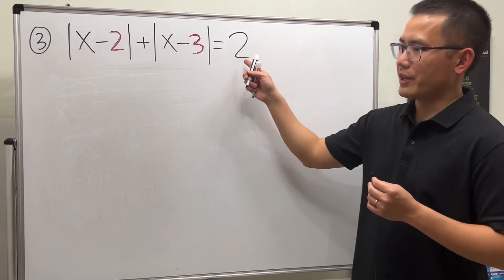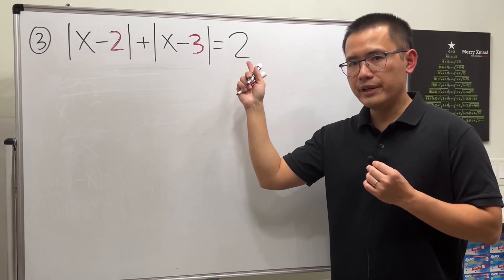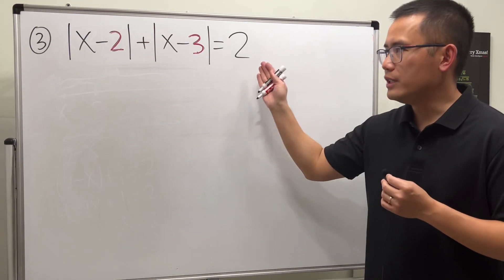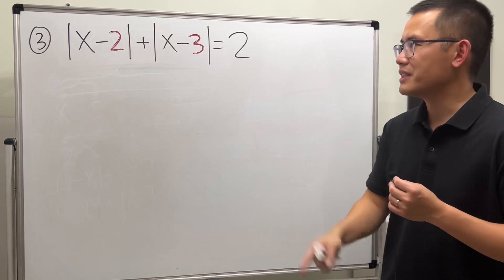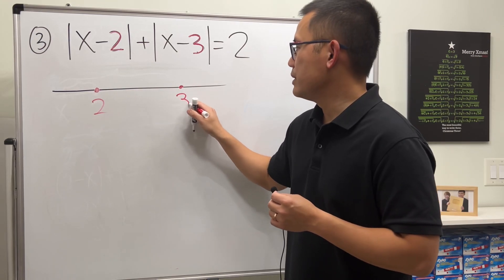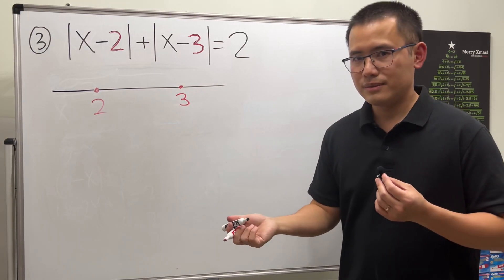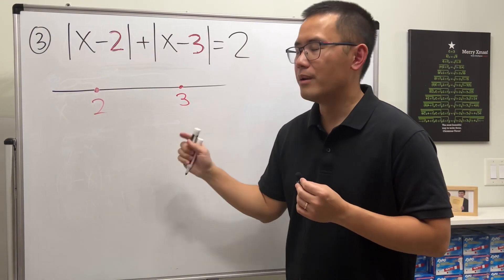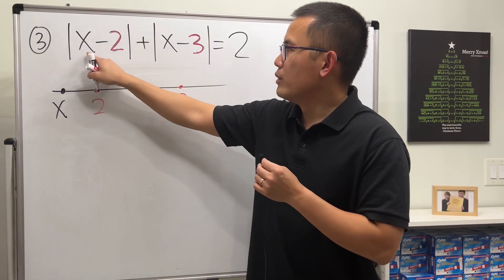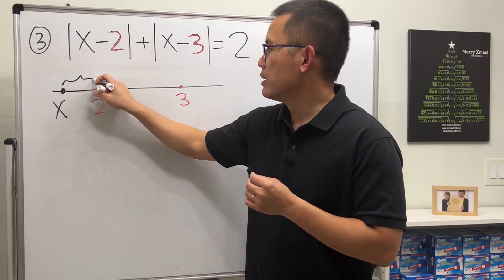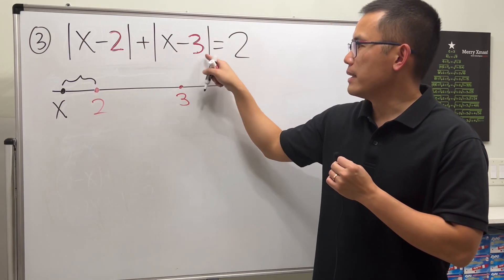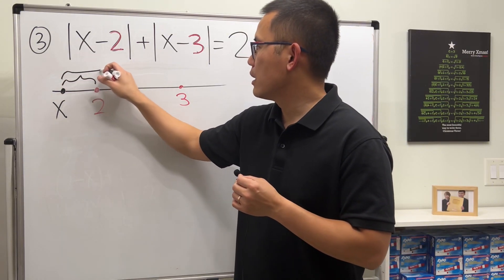Now for the last equation, we have 2 on the right-hand side, and because 2 is bigger than 1, we are going to have exactly two solutions. Here's the picture: we have 2 here and 3 here. Now x is not in between — let's consider x to the left of 2 first. The absolute value of x minus 2 is the distance between x and 2, and the absolute value of x minus 3 is the distance from x all the way to 3.